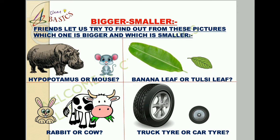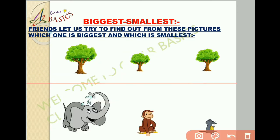Now we will compare sizes among more than two objects. Friends, you can see there are three trees. Find out which one is biggest and which one is smallest. Do you know the meaning of smallest and biggest? Let me explain. Smallest means small in size compared to the other objects. But there is a point to keep in mind: we use the word 'smallest' when there is a comparison among more than two objects.